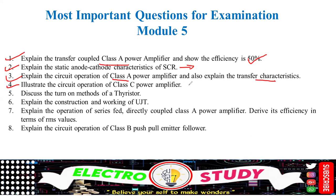Illustrate the circuit operation of the Class C power amplifier and calculate its efficiency. You may also get a question on discussing the turn-off methods of a thyristor — such as gate triggering, light triggering, temperature triggering, and dI/dt triggering. There are different types of methods available.